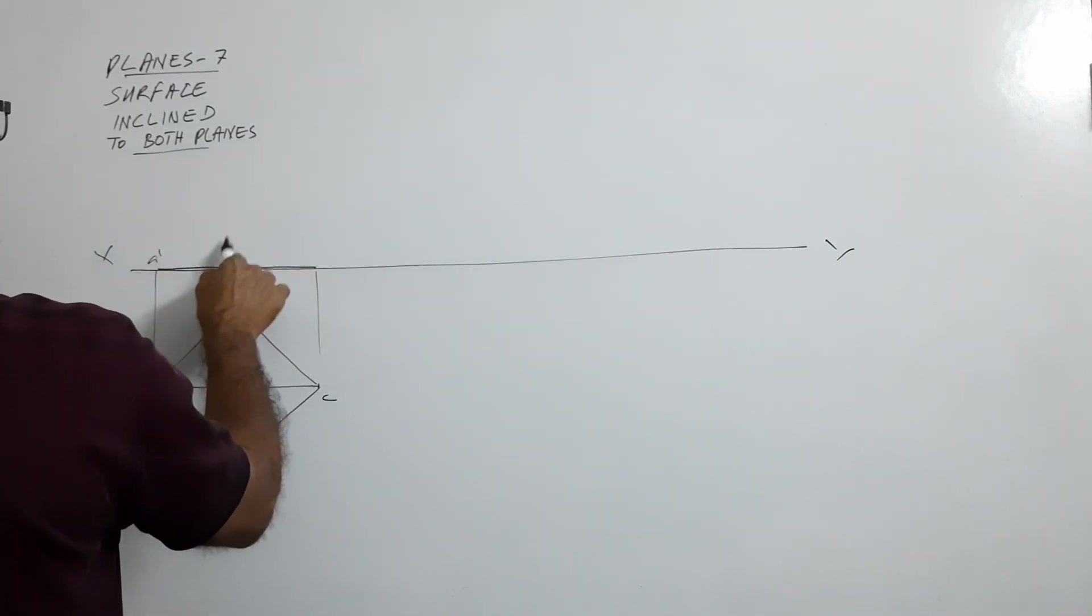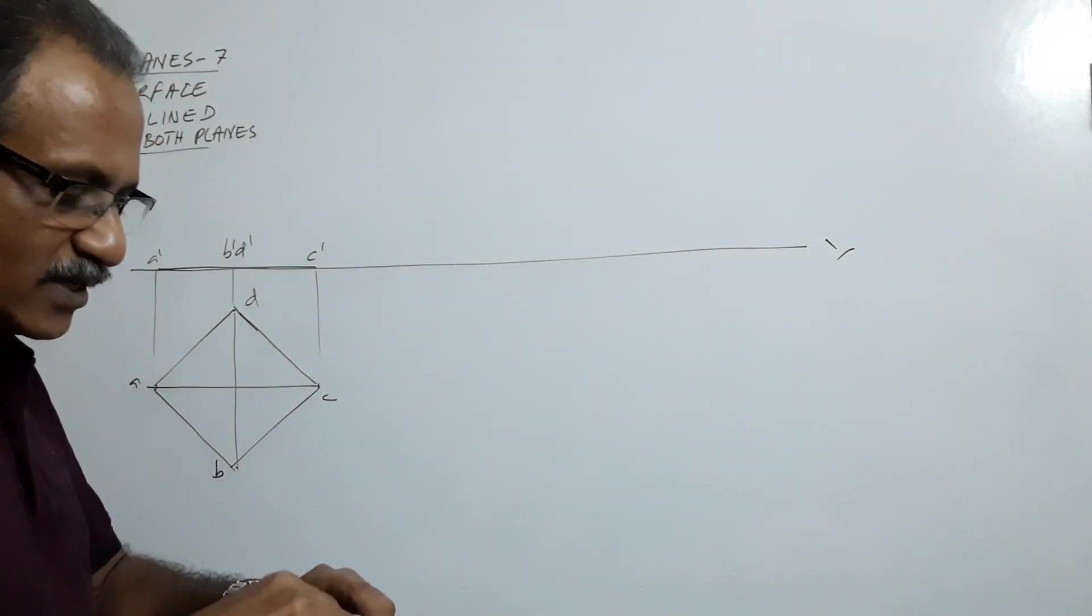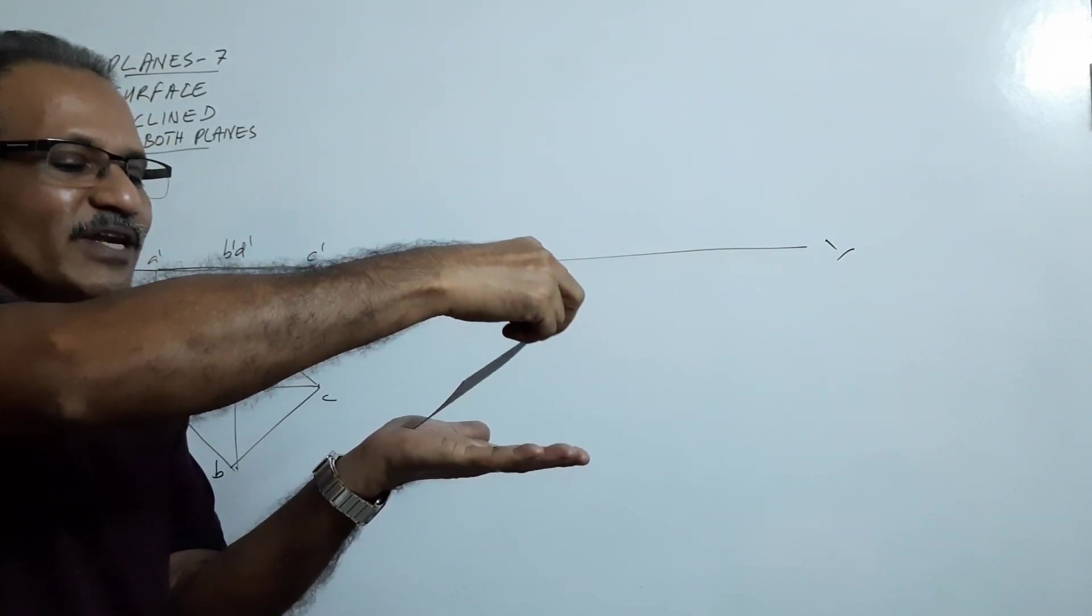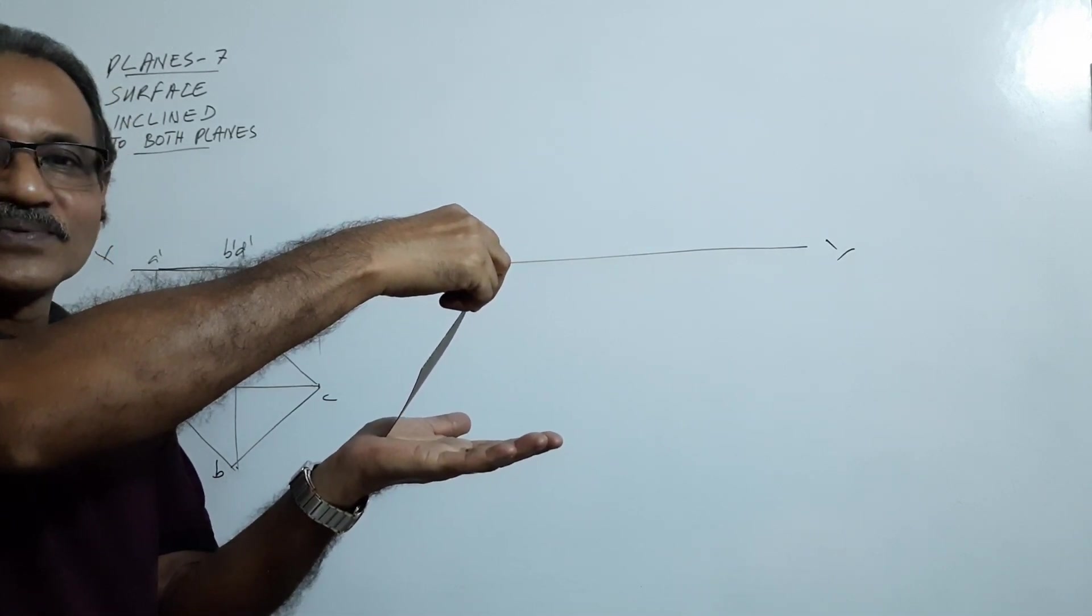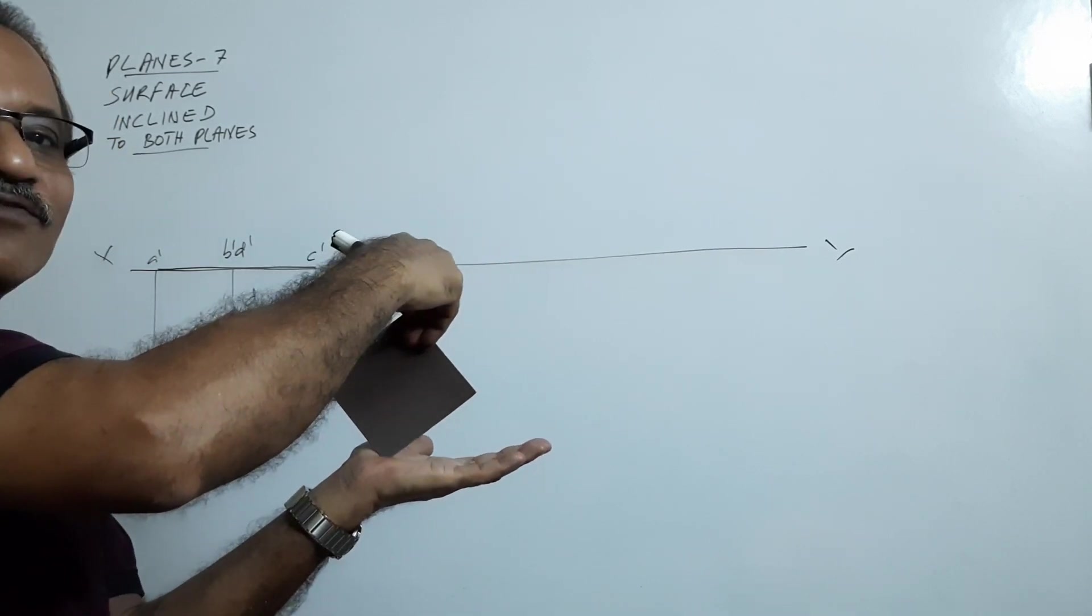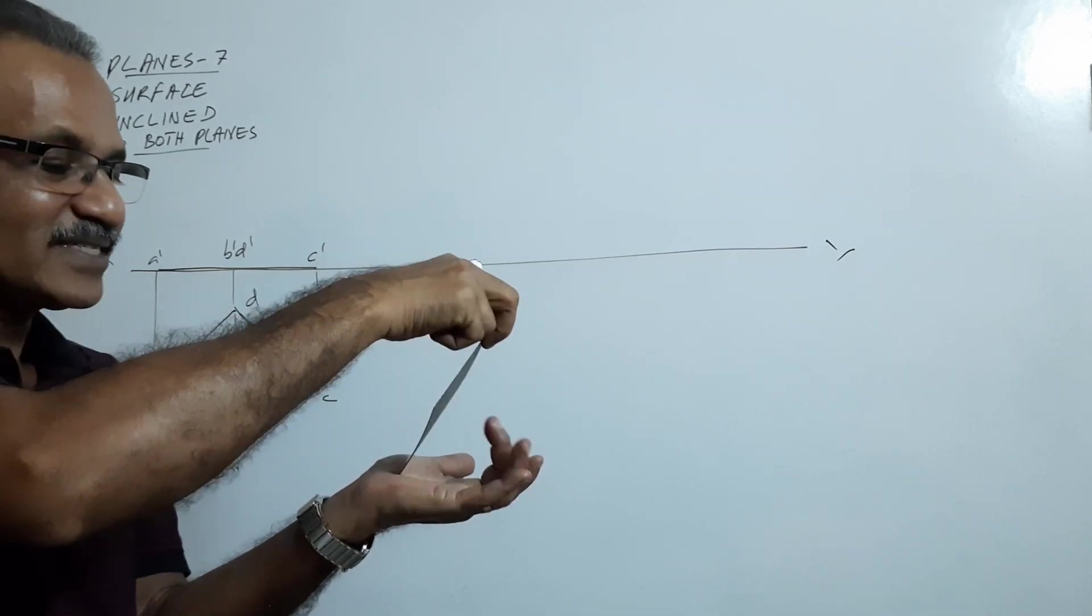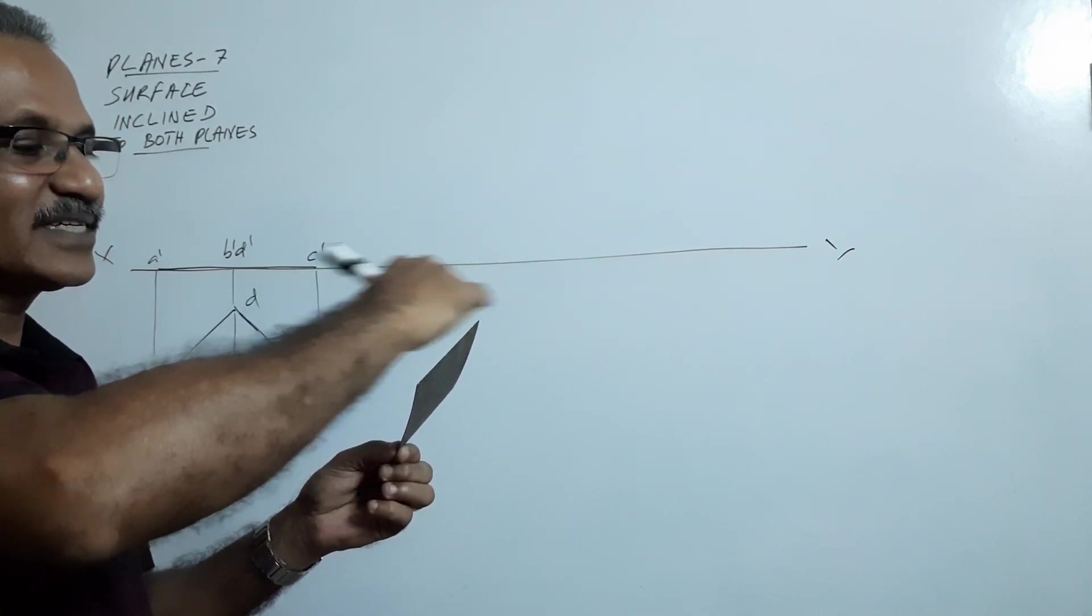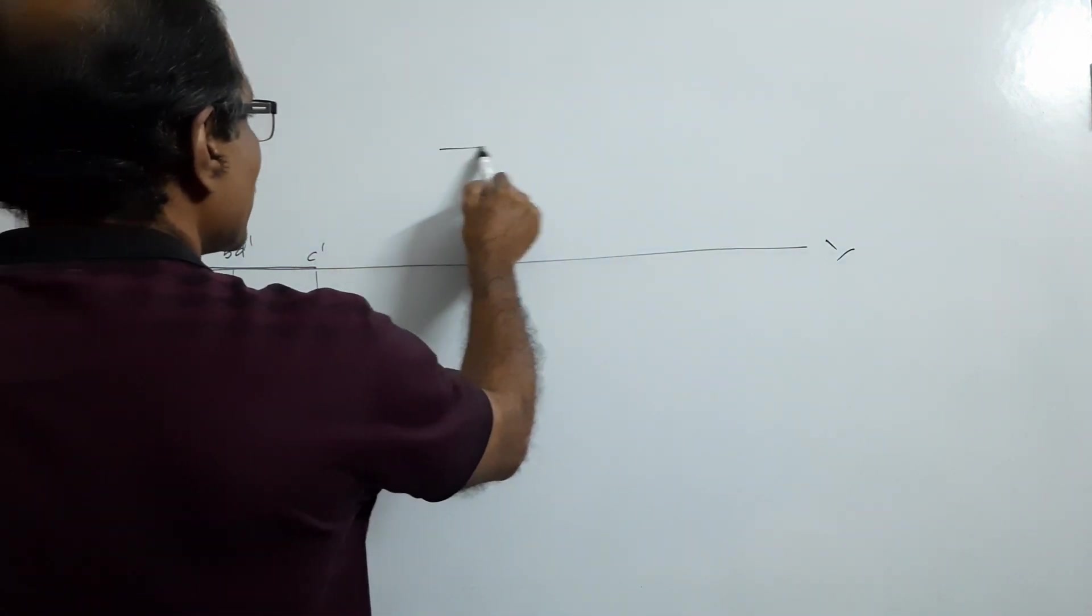A dash, B dash, C dash, D dash - raise it. Raise what? Raise this corner. How far will you raise it? Till the front view when rotated like this gives 70mm and 45mm. That means when you raise it, this height must be 45. So what do you do? 45mm from XY line, draw a horizontal line.